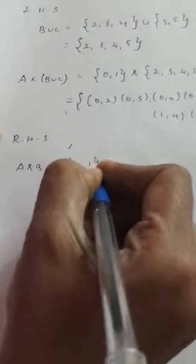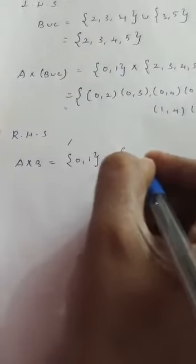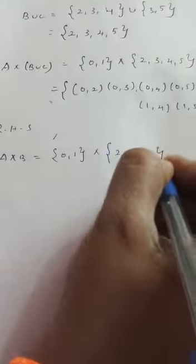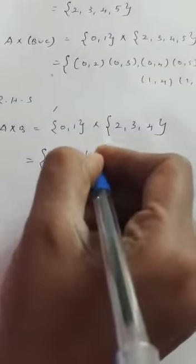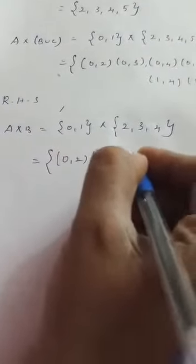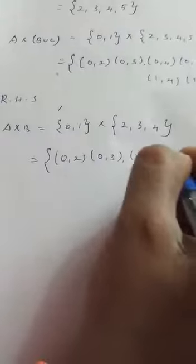Now you are going to consider RHS. In RHS, first you are going to take A cross B. So what is your set A? A is 0, 1 cross B. So write it as ordered pairs: (0,2), (0,3), (0,4), (1,2), (1,3), (1,4).